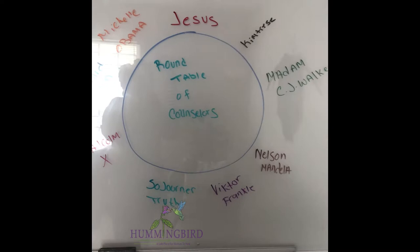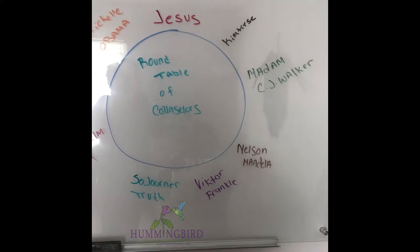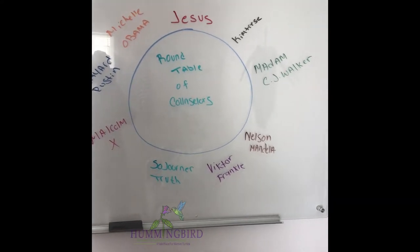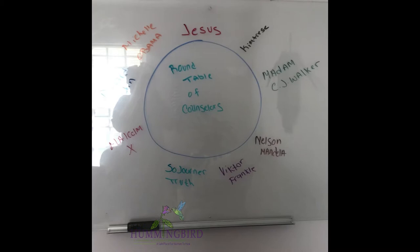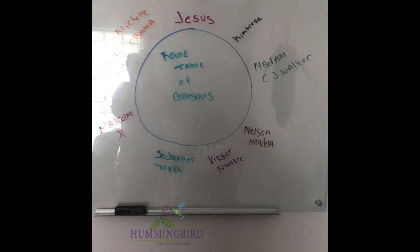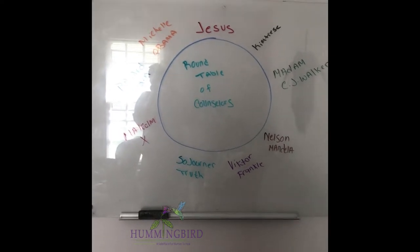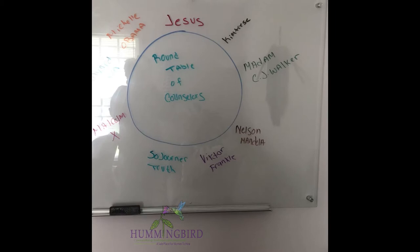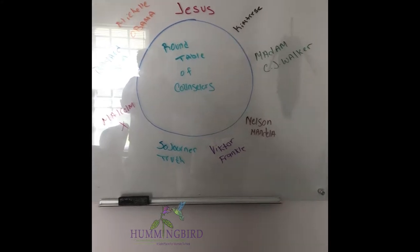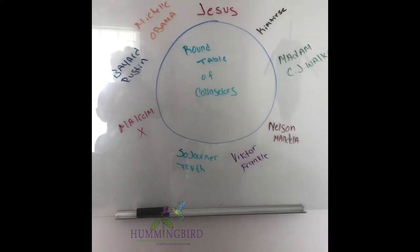Then Madam C.J. Walker, who was an amazing entrepreneur. I am an entrepreneur and I just hope I could cover some of the ground she covered, and hopefully more. Nelson Mandela — just the epitome of peace, forgiveness, and freedom — I've got to have him at my table. Victor Frankl: his book 'Man's Search for Meaning' — oh my goodness, if you haven't read it, you need to. It just gives you a different perspective on life. Sojourner Truth — all of the work she's done for women's rights — had to have her at my table.